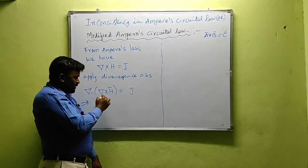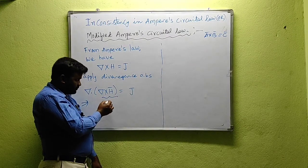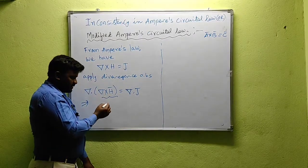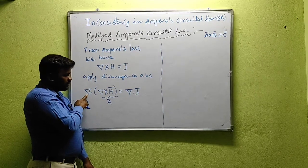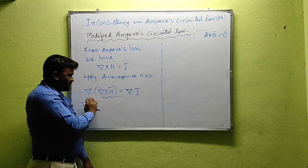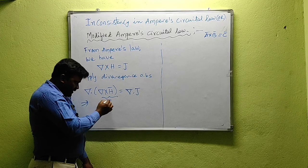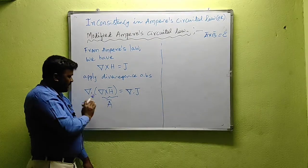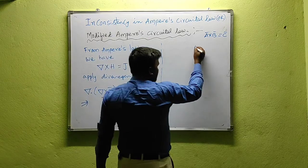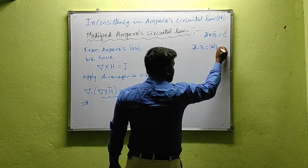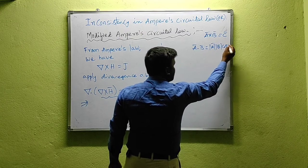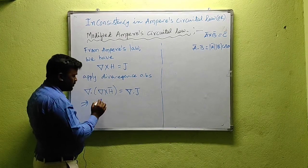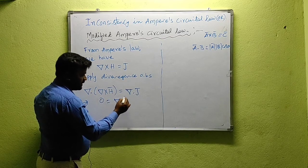On the right hand side, it should be del dot J. Del cross H gives some vector A, and this vector A is perpendicular to both del and H. The dot product A·del equals mod A times mod del times cos theta, where theta is the angle between them. Since A is perpendicular to del, the angle is 90 degrees, and cos 90 is 0. So del dot J equals 0.